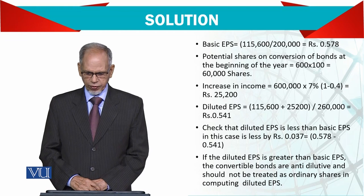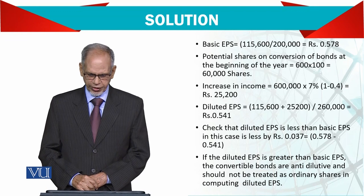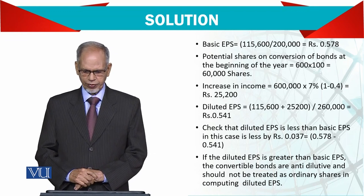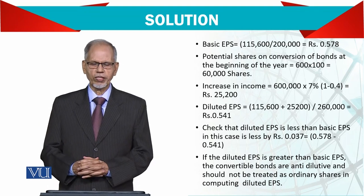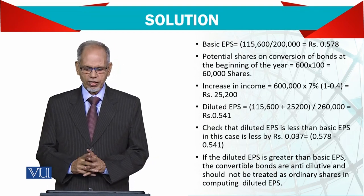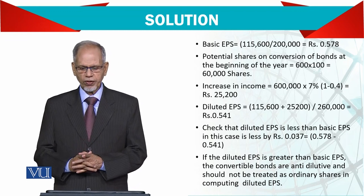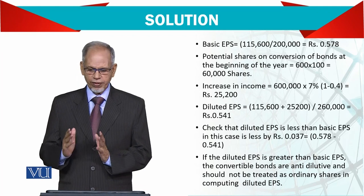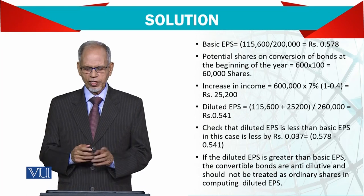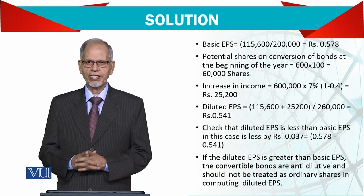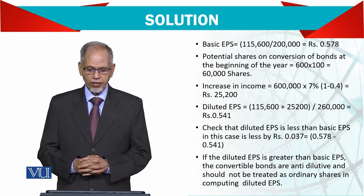For potential shares, the number converted is 600 bonds by 100, which comes to 60,000 shares. The increase in income is 7% of 600,000, then take 60% of that, which gives 25,200. So total earnings become 115,600 plus 25,200, and total shares become 200,000 plus 60,000, giving 260,000. The diluted earnings per share is 0.541.